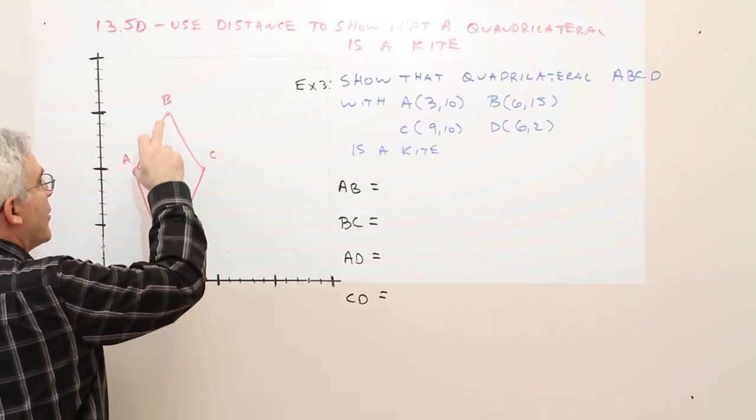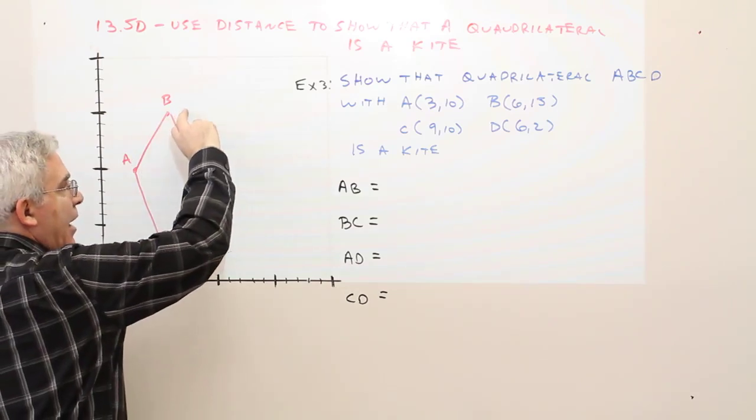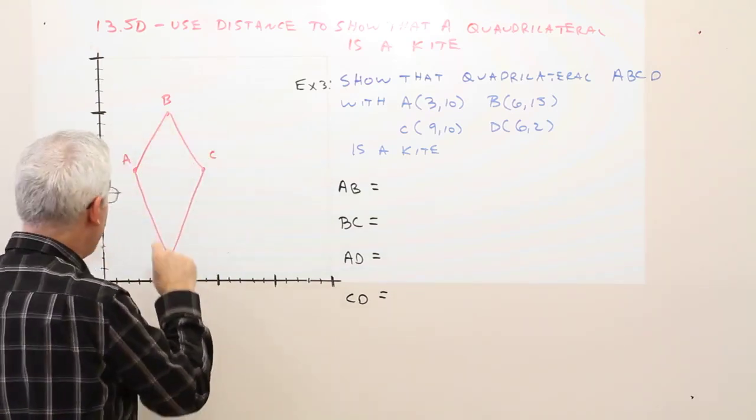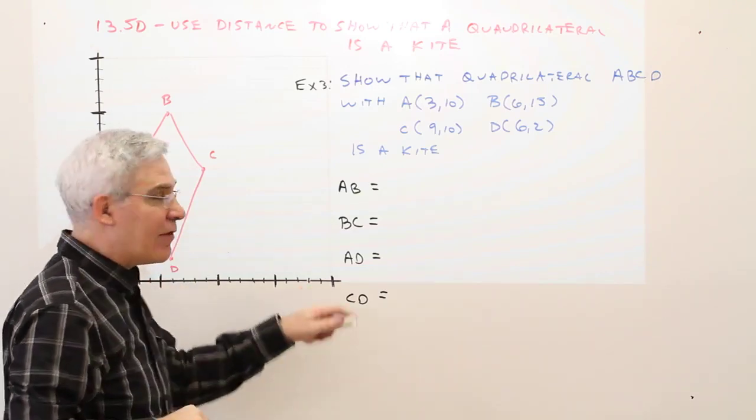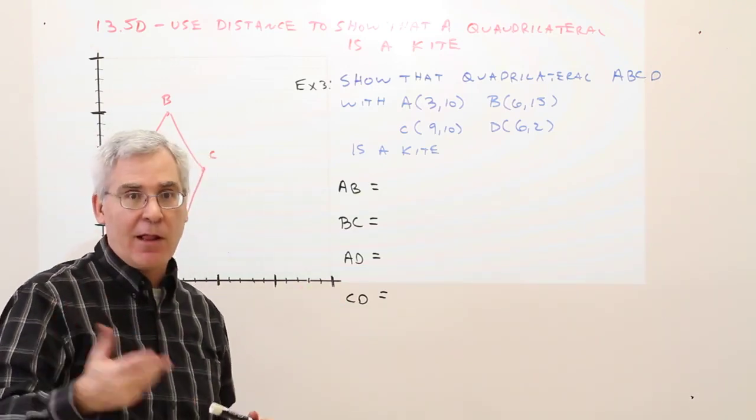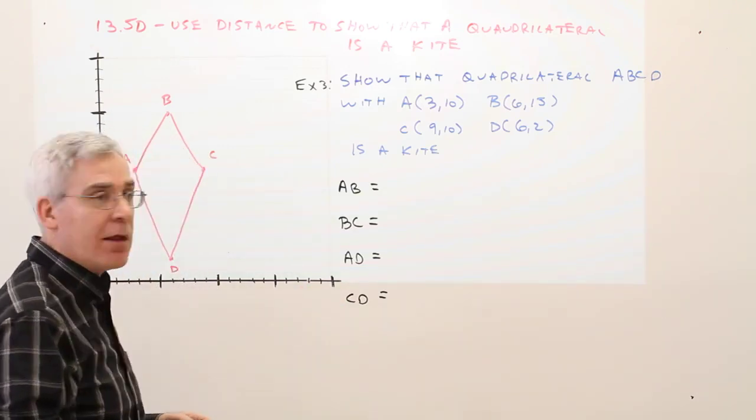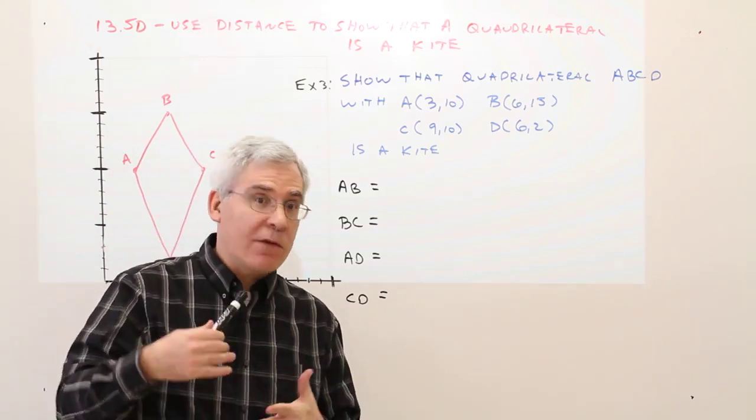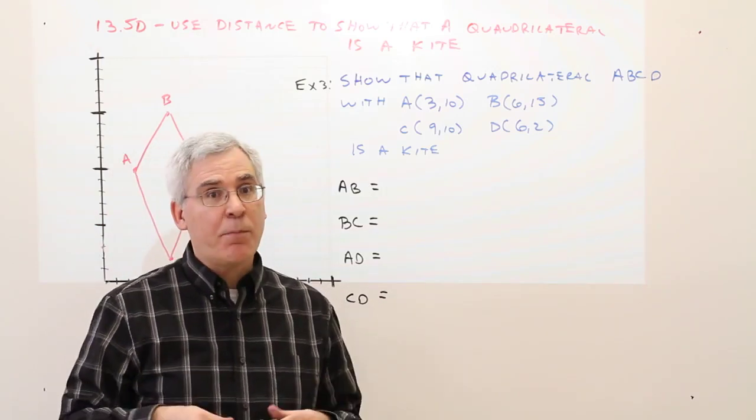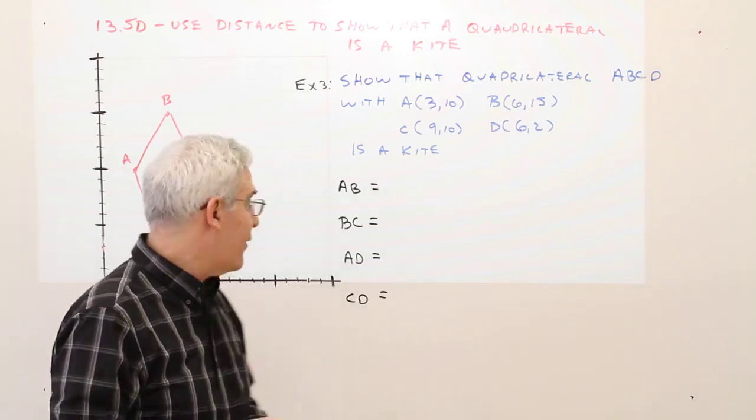So what I want to do is show that AB and BC have the same distance, and AD and CD have the same distance. And then I'll have shown that it's a kite. So you could use the distance formula or you could use the Pythagorean theorem. I'll show you how to do both ways.